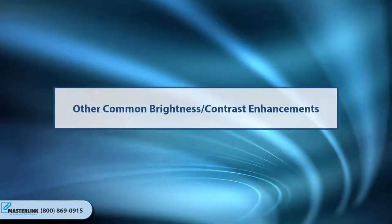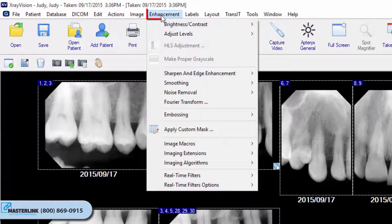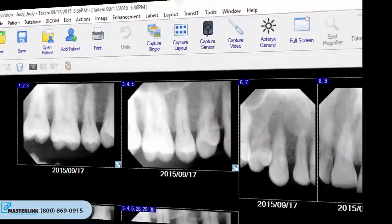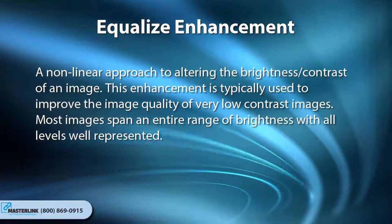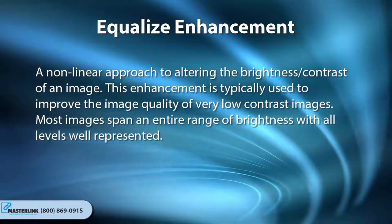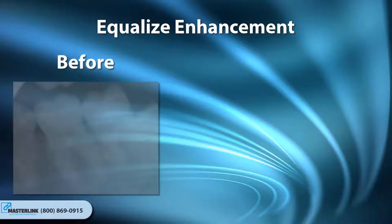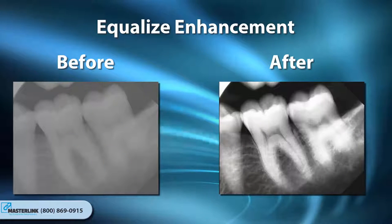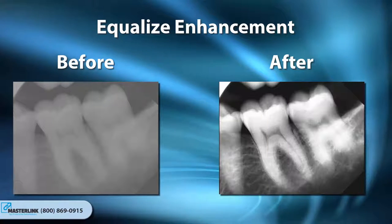Other Common Brightness Contrast Enhancements. The imaging application offers additional BC enhancements available on the main menu under Enhancements, Brightness Contrast. The Equalize Enhancement is a non-linear approach to altering the brightness contrast of an image, typically used to improve image quality of very low contrast images. Sometimes images are too light or too dark and some levels are overpopulated, leaving others underpopulated. The Equalize effect modifies an image so that all levels of brightness are equally well represented.